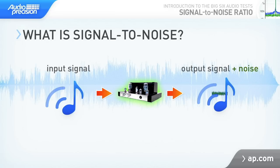In many cases, the noise may not be audible at all. But if the signal level is very small, even a low noise level can have an adverse effect. To make the determination objectively, we need to look at the relative strengths of the output signal and the noise level — or to put it another way, the signal-to-noise ratio.